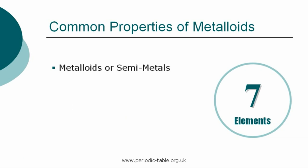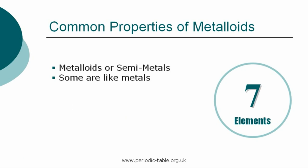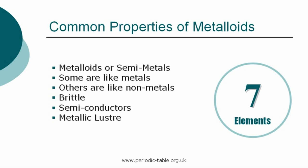Boron is different from other metalloids because it is not a metal. Metalloids are the elements found between the boundaries that distinguish metals from nonmetals. Metalloids can have some properties partially like metals and partially like nonmetals. The terms brittleness, semi-conductivity, and metallic luster are often used as distinguishing indicators of metalloid status.